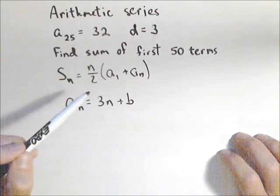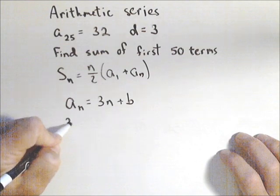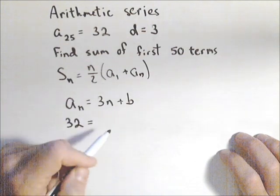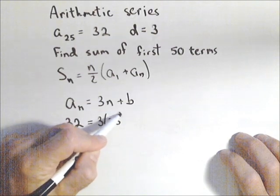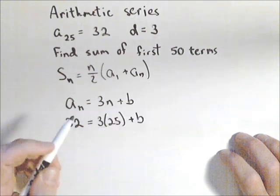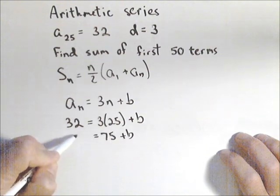So I'm gonna plug in 25 and 32, just like I would a linear equation trying to find the y-intercept. So 32 is my answer when n is 25 plus b. So I get 75 plus b equals 32.